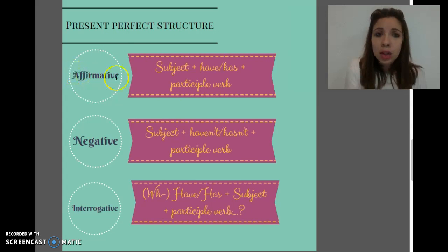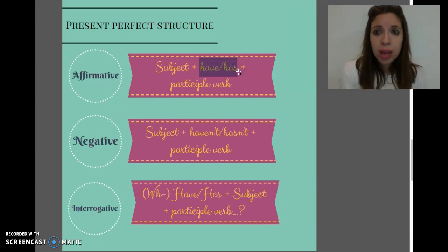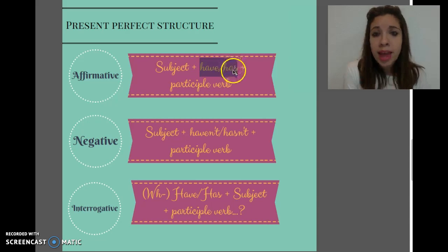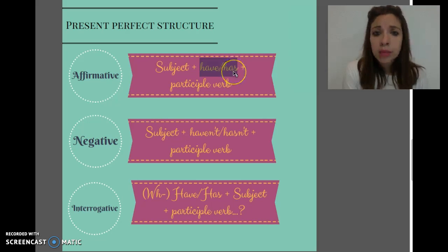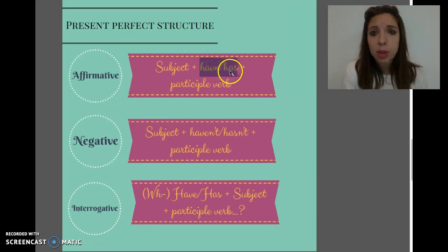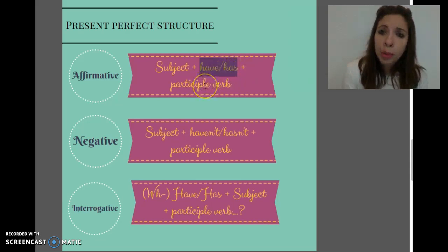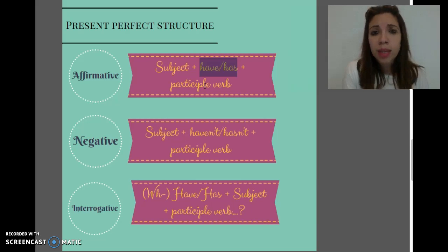The structure is straightforward: you only have to remember to use "have" or "has". Remember that "have" is for I, you, we, and they, and "has" is only for the third person singular — that means she, he, or it. So you put the subject, then "have" or "has", and the past participle. Remember that regular verbs make the participle with "-ed", and for irregular verbs you have to go to the third column and learn them.